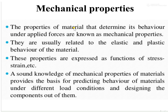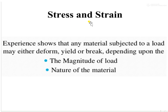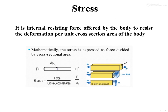Stress and strain both depend upon magnitude of mechanical properties. When a material is subjected to stress it may deform, elongate, or break — this depends upon the magnitude of the load or stress, and also on the nature of the material. Stress is force divided by cross-sectional area: sigma equals force divided by A-naught, where A-naught is the cross-sectional area.